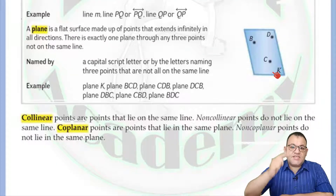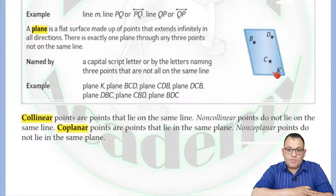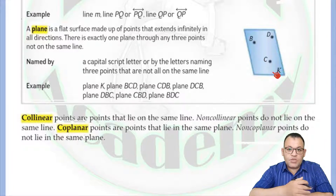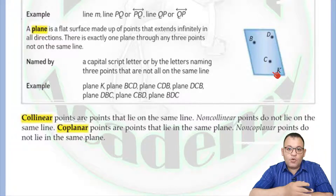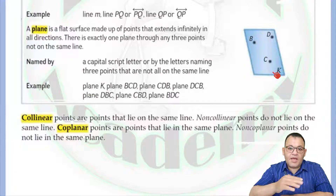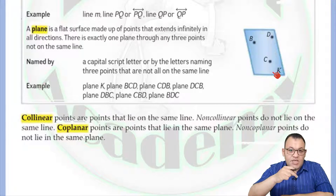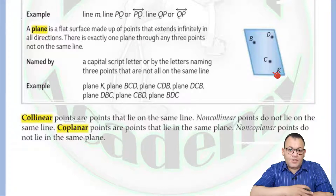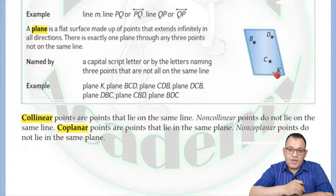For any two points, there is exactly one line passing through them. If you have more than two points on it, it means all of these points are collinear. Collinear points are defined as the set of points which lie in the same line. For any three points, there is exactly one plane passing through them. If you have more than three points lying on the same plane, we can say all of these points are coplanar. Coplanar means the points which lie in the same plane.